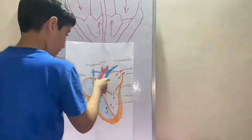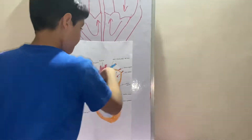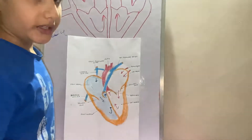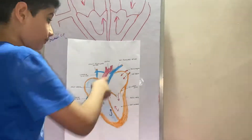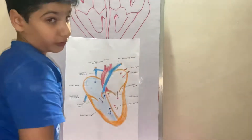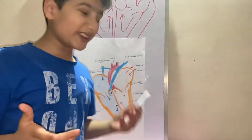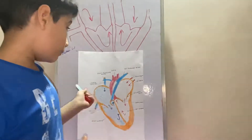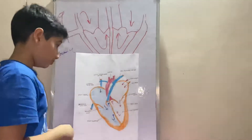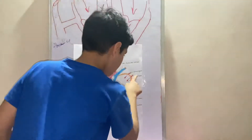From the pulmonary artery, it goes to the right pulmonary artery and to the left pulmonary artery. The left pulmonary artery takes the deoxygenated blood to the left lung, and the right pulmonary artery takes it to the right lung. It goes to the lungs to get oxygenated — to get clean, pure blood. There it exchanges oxygen and releases the carbon dioxide from the blood.